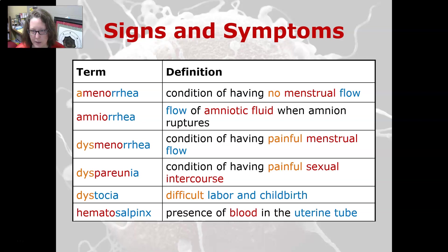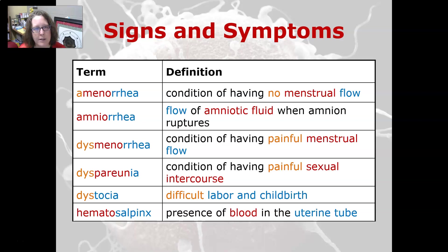Amenorrhea is a condition of having no menstrual flow. Amnorrhea is a flow of amniotic fluid when the amnion ruptures — we often refer to that as water breaking.